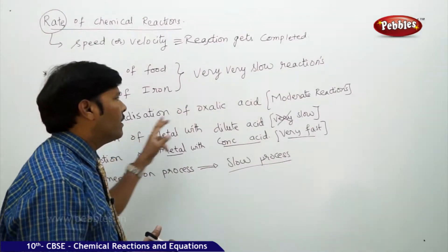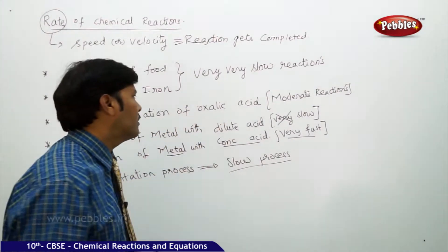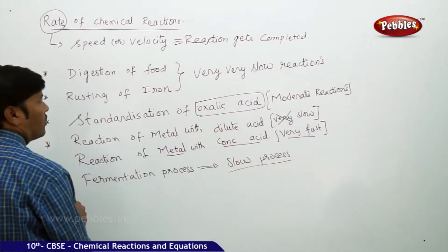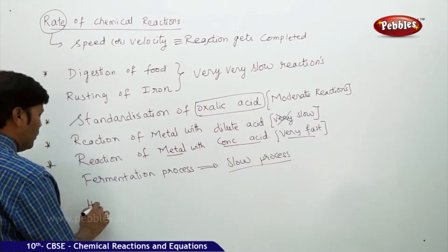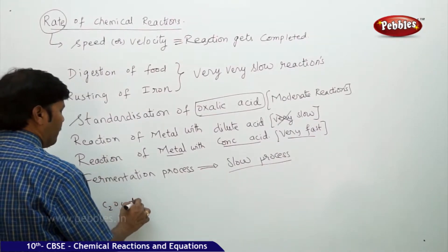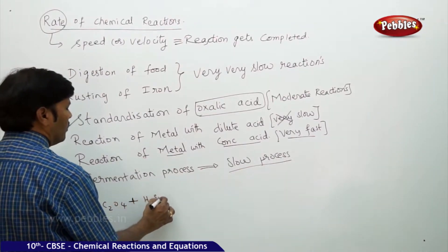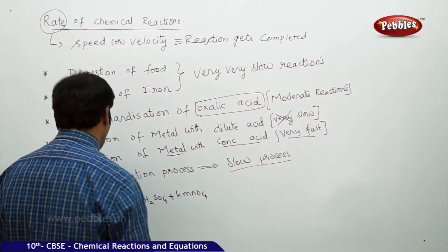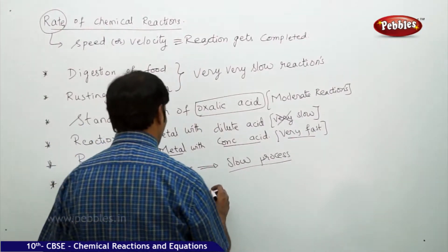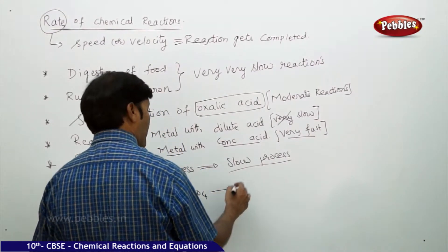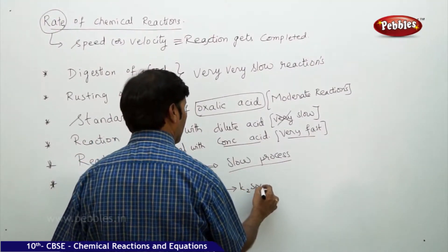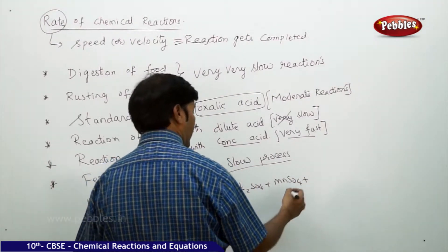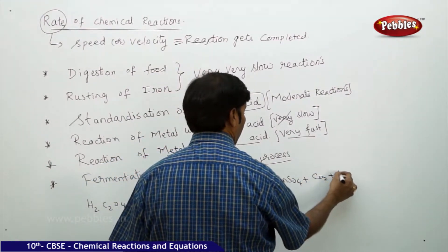Standardization of oxalic acid is a typical reaction. You know the formula of oxalic acid: H2C2O4 plus H2SO4 plus KMnO4. For example, we can take K2SO4 plus MnSO4 plus carbon dioxide plus water.